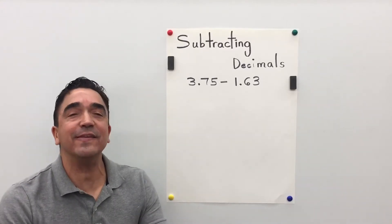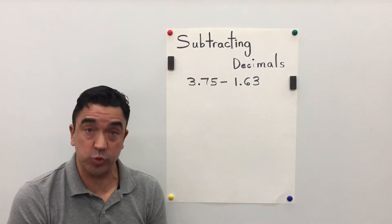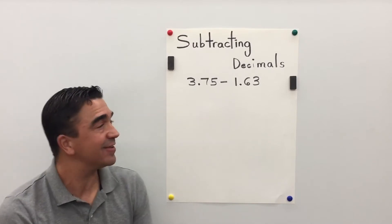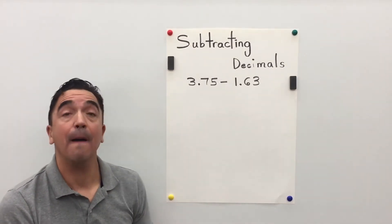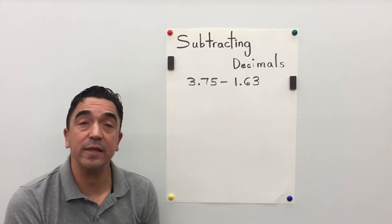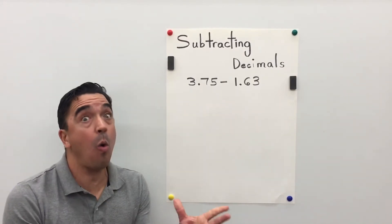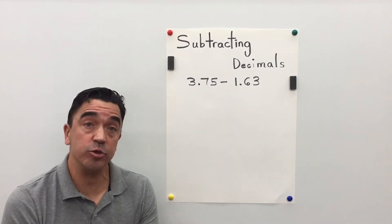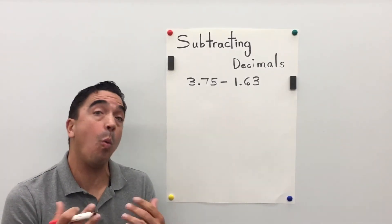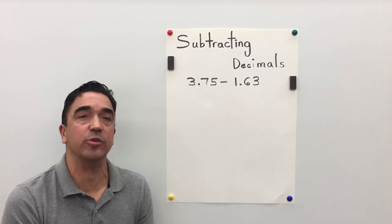Hi there, Coach Mike, and today we will be subtracting decimals. 3.75 minus 1.63, or 3 and 75 hundredths minus 1 and 63 hundredths.